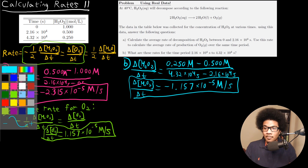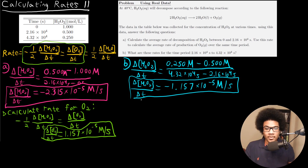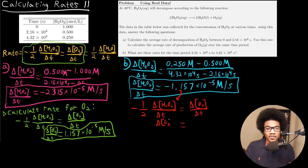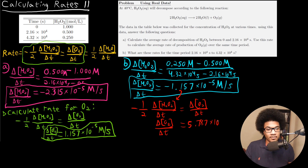We didn't really need to do this calculation to say the rate slowed down — we knew that before we even started. Now we're able to quantify how the rate slowed down: it was cut in half. Same time interval, half the concentration lost, so the rate of decomposition was cut in half. The second part is calculating the rate for O2 using that exact same relationship, taking this number and dividing by two and multiplying by the negative sign. Our rate of production for O2 is 5.787 × 10⁻⁶ molar per second.